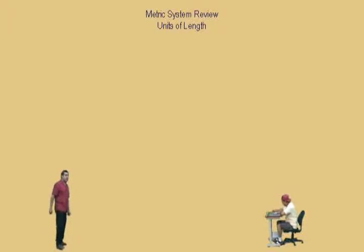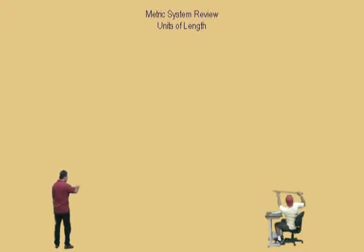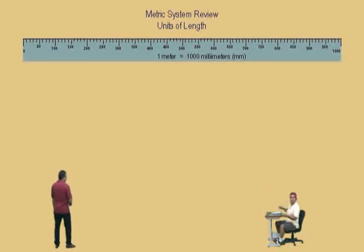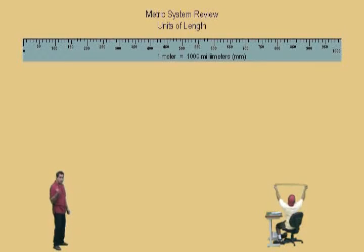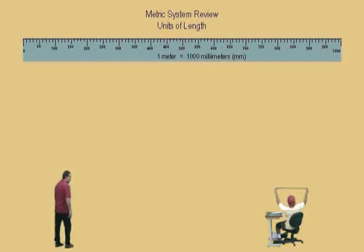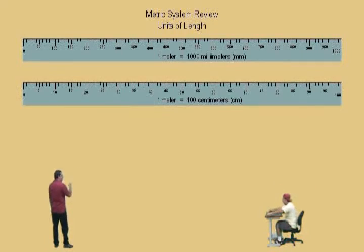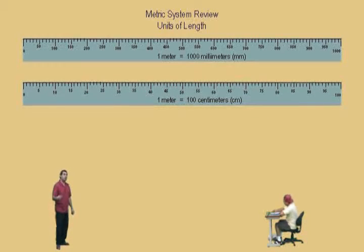We're going to begin with units of length. Got your meter stick, Charlie? Yep. Okay, you're going to be helping us out with this. Here's a meter stick broken up into millimeters. Remember, milli means one thousandths of, so there are a thousand millimeters in one meter. Here's a meter stick broken up into centimeters. Remember, centi means a hundredth of, a hundredth part of, so there are a hundred centimeters in one meter.